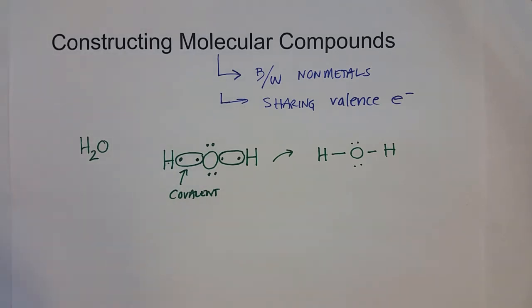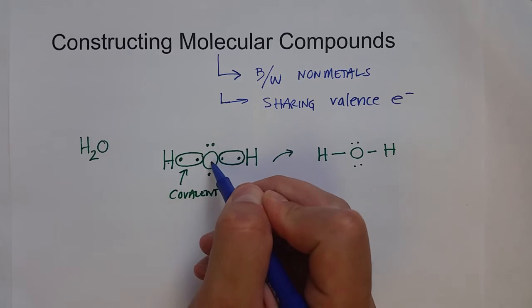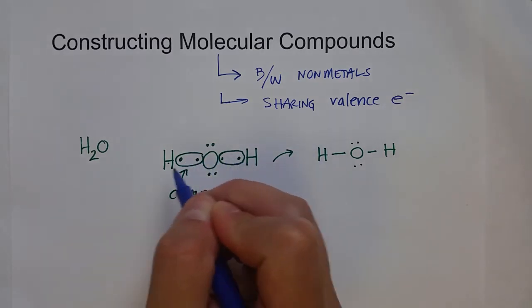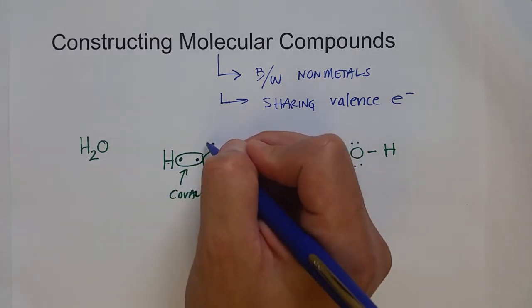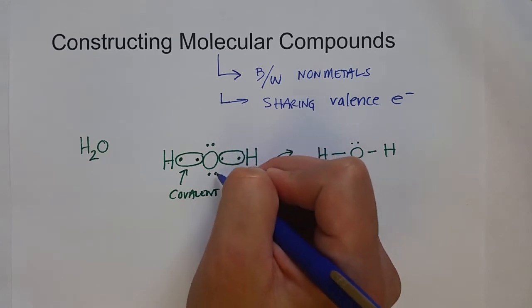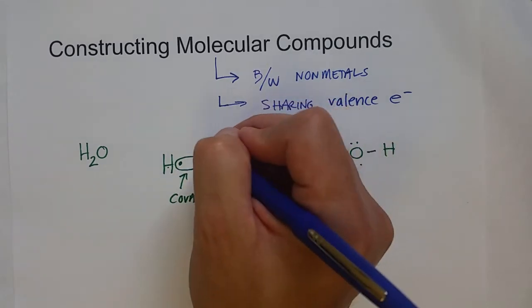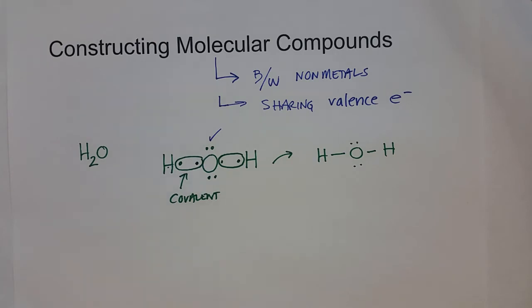Now we can see that since this oxygen atom is sharing electrons with these two hydrogen atoms, it has one, two, three, four, five, six, seven, eight valence electrons. So it satisfies the octet rule.